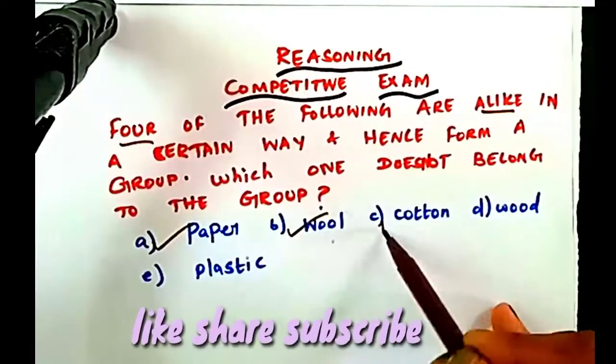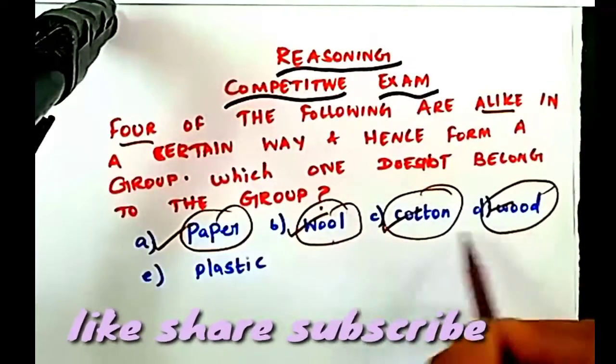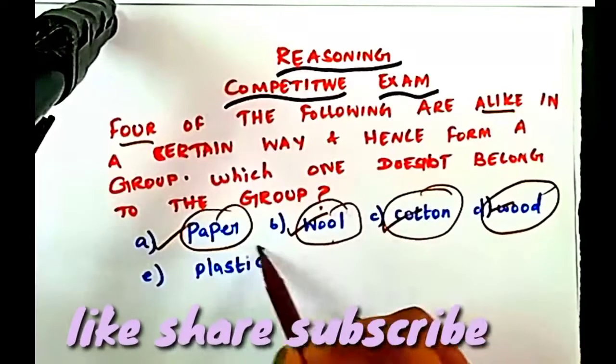Paper, wool, cotton. These are all naturally available materials, these are naturally available materials. Plastic is artificial.